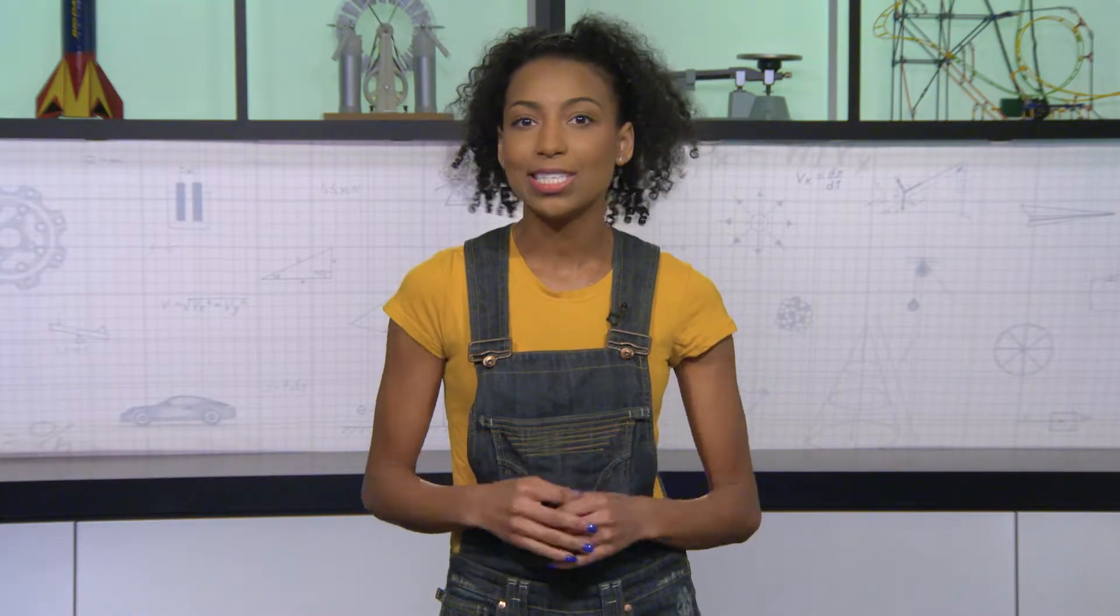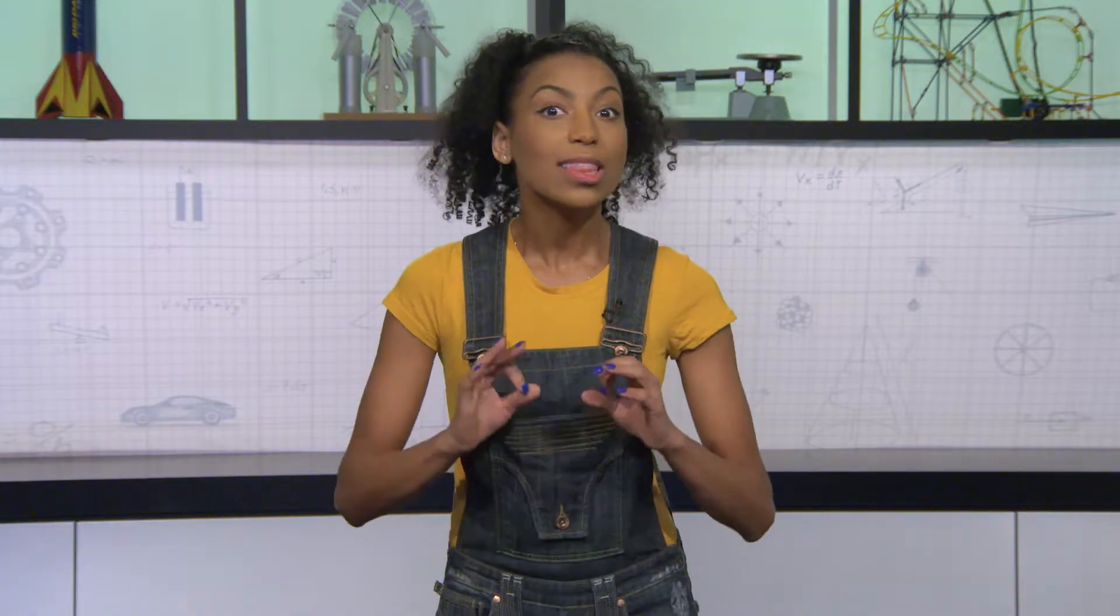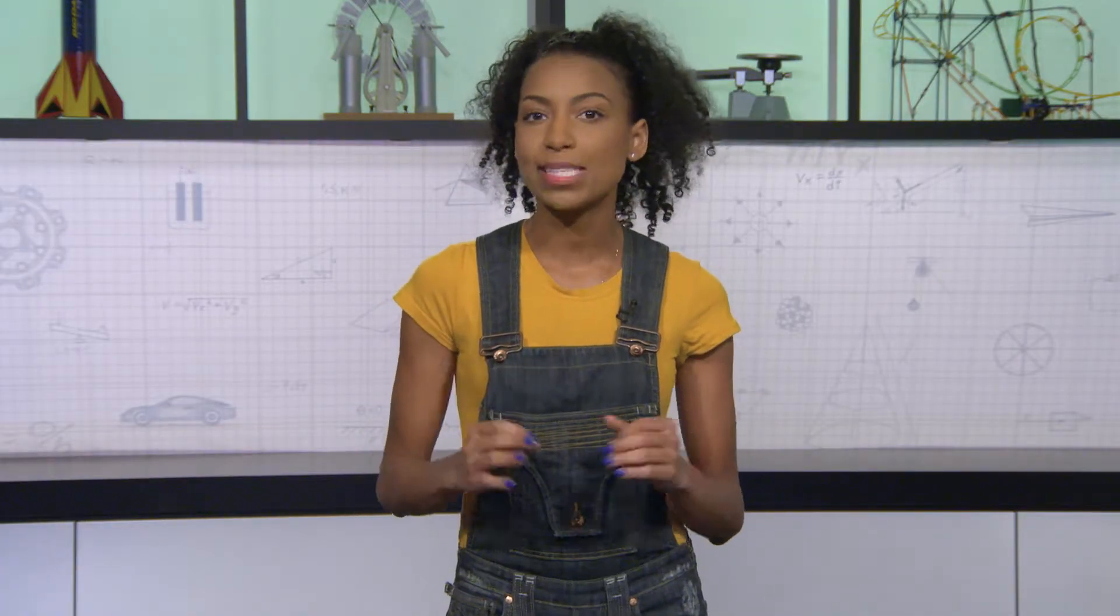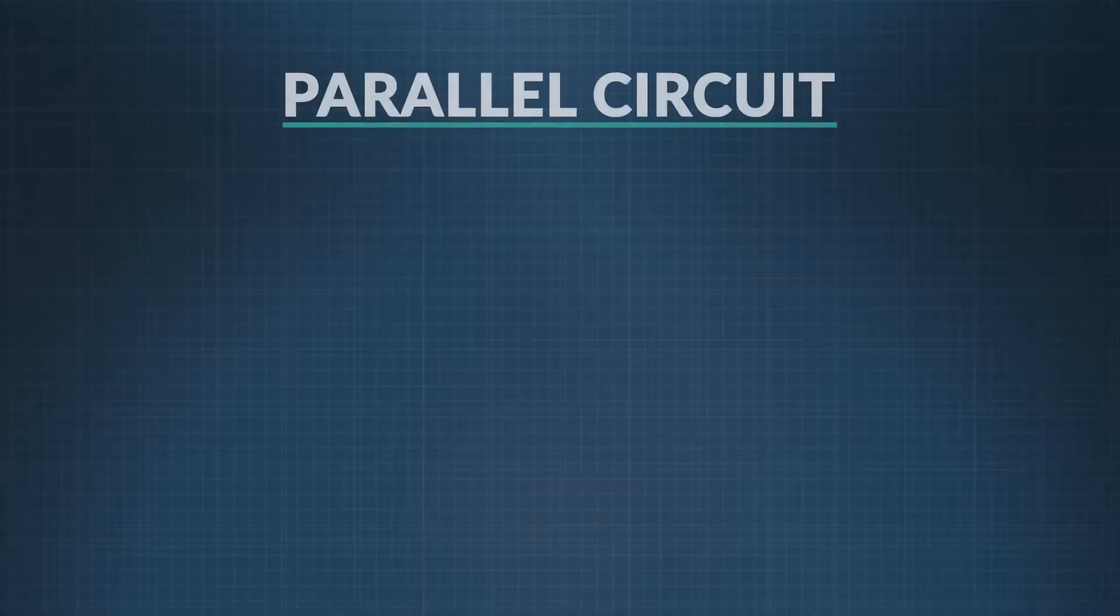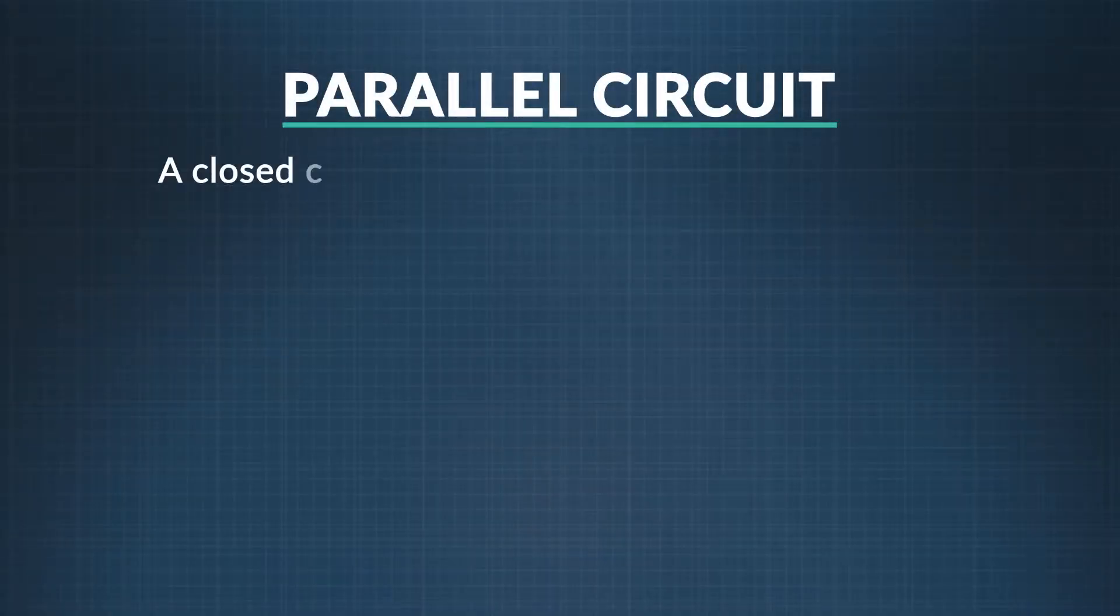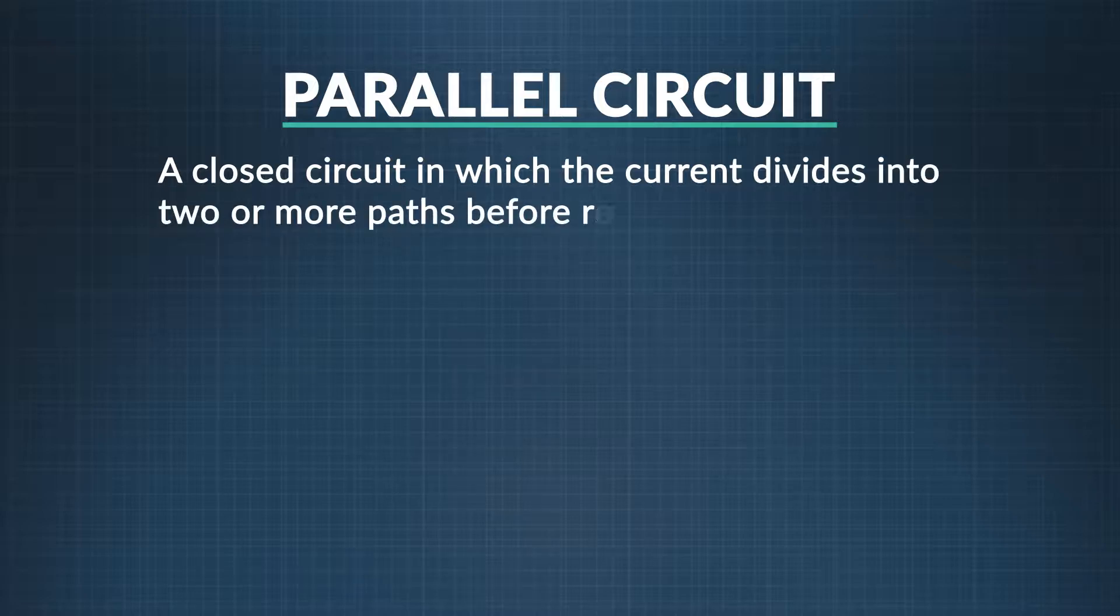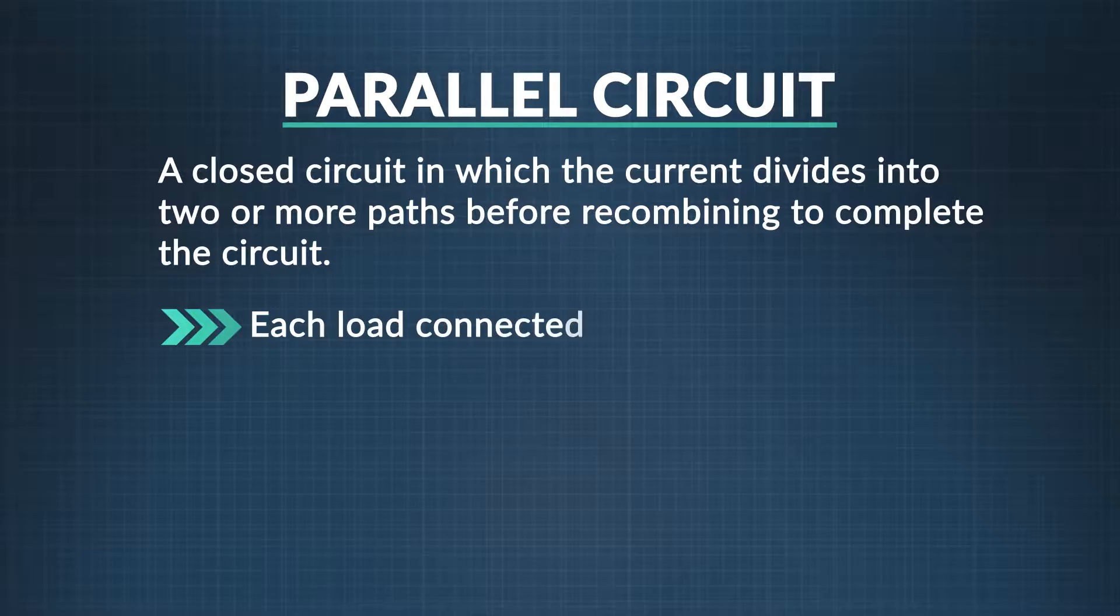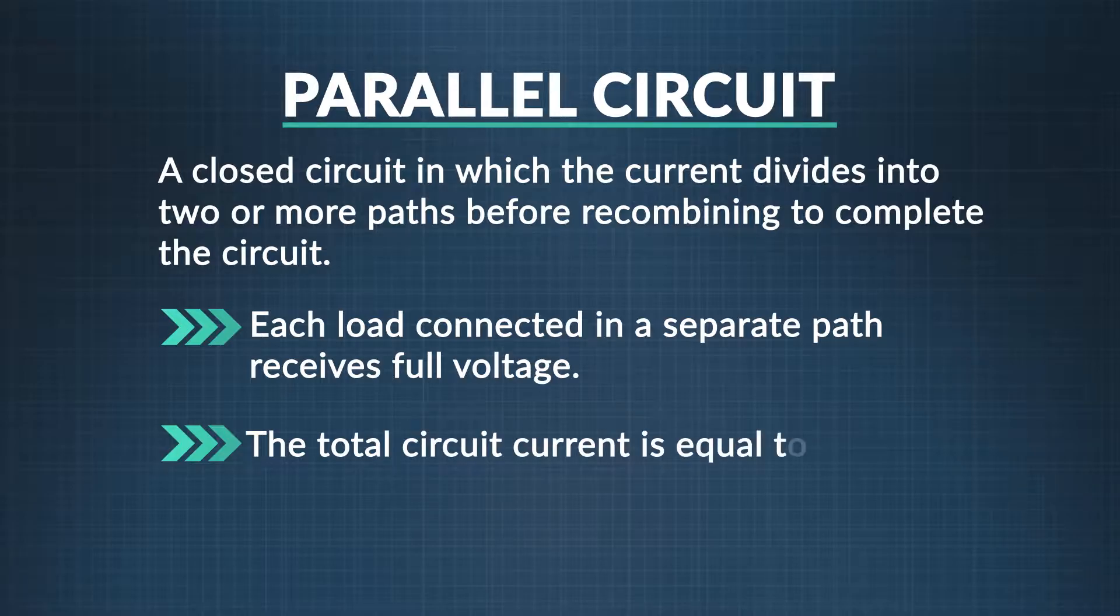The answer is an ingenious kind of circuit called a parallel circuit. It's a simple, logical solution to provide the basic wiring we need to supply electricity to our communities. A parallel circuit is a closed circuit in which the current divides into two or more paths before recombining to complete the circuit. Each resistor connected in a separate path receives the full circuit voltage. The total circuit current is equal to the sum of the individual branch currents.